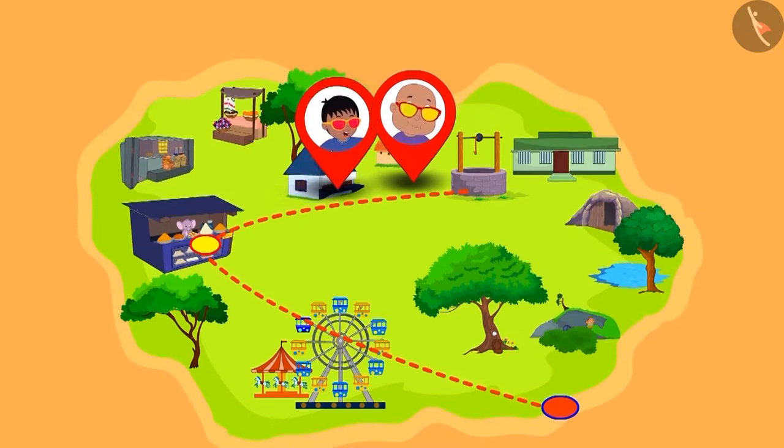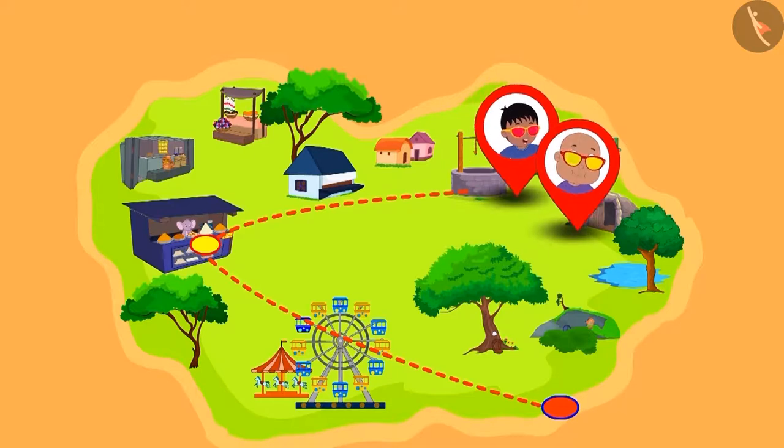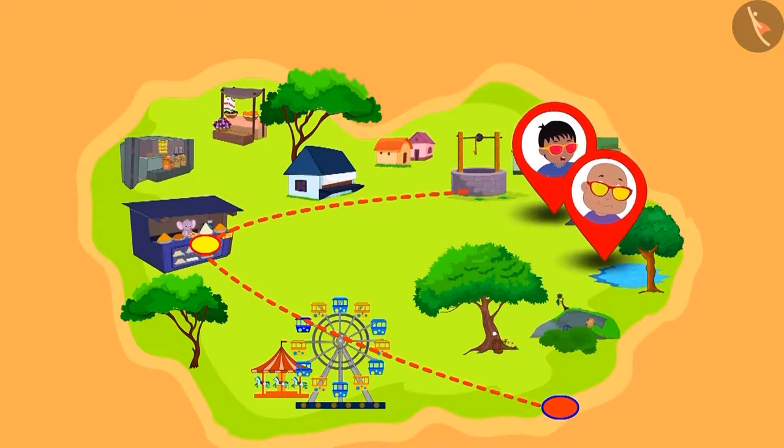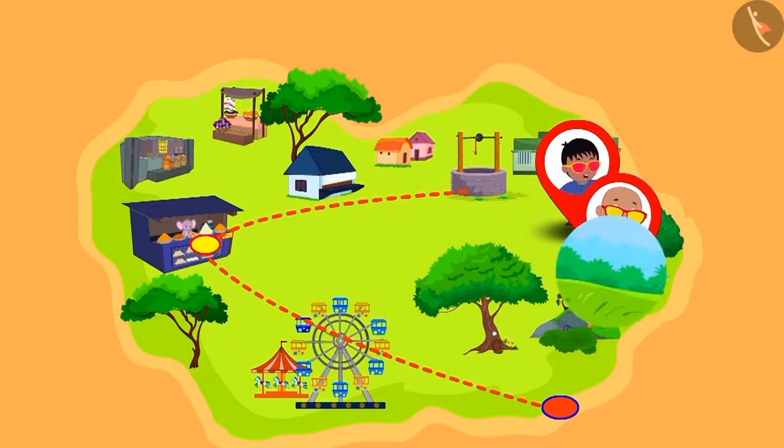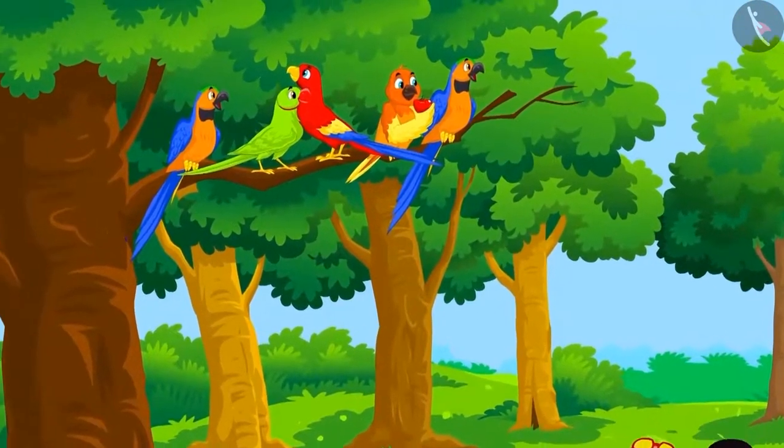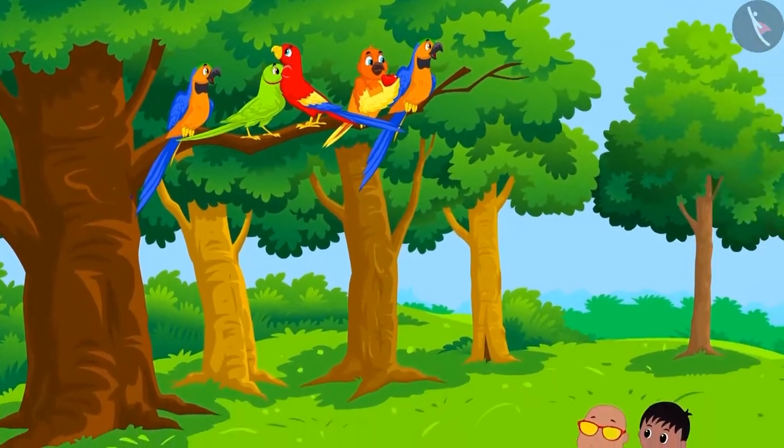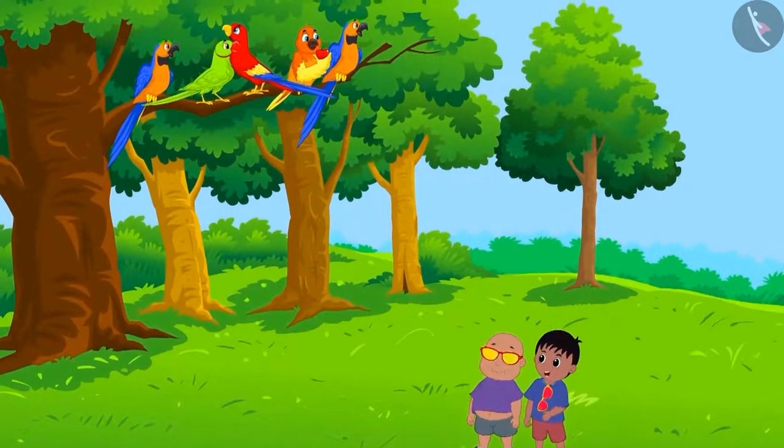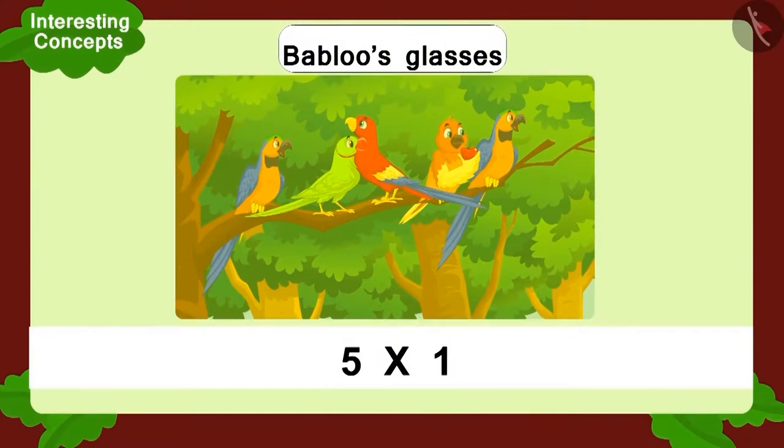Bablu and Raju were very excited seeing the multiplication magic of their glasses. They didn't realize that they had reached the park. In the park, five birds were sitting on a branch of a tree. This time, Bablu looked at the tree through his glasses first. He saw this multiplication.